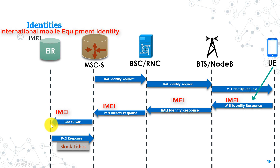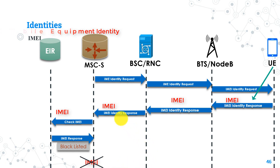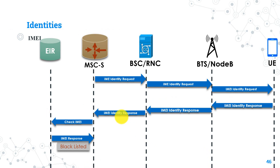The EIR checks the IMEI in its database to see whether the number is blacklisted or whitelisted. If it is blacklisted, it responds to the MSC with 'IMEI blacklisted,' so the MSC takes the decision of blocking the mobile handset from accessing the network. This scenario always happens during user attachment to the network, where checking the IMEI is part of the attach procedures. That's all for the IMEI.